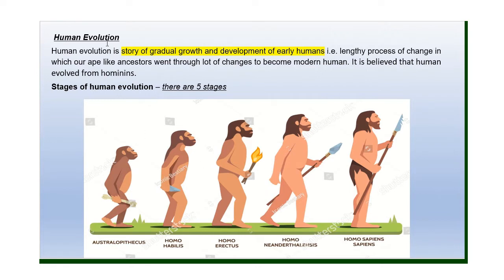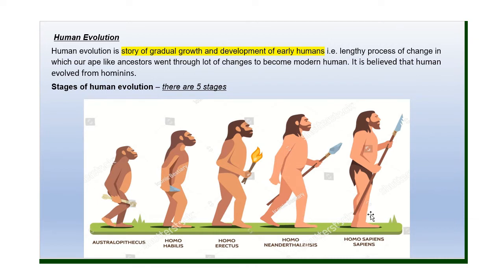So we can say human evolution is the story of gradual growth and development of early humans, in which our ape-like ancestors changed into modern humans. It is believed that humans evolved from hominids. There are five stages according to mental and physical changes: first, Australopithecus; second, Homo habilis; third, Homo erectus; fourth, Neanderthal; and fifth, Homo sapiens. These are the five different stages of human evolution.